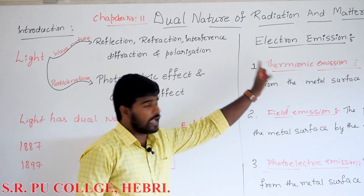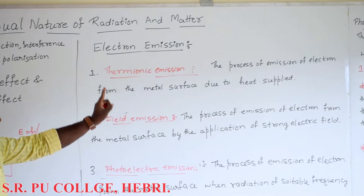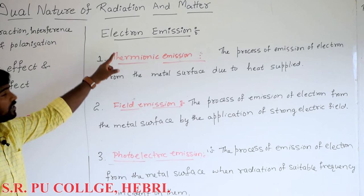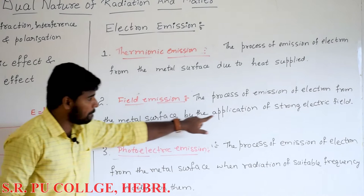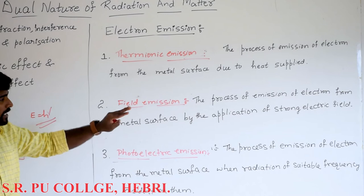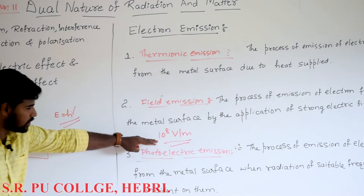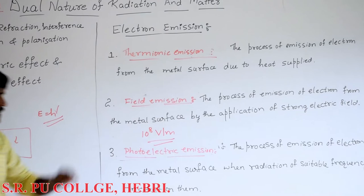The emission of electron from the metal is called electron emission. The first type: thermionic emission — the process of emission of electron from the metal surface due to heat supplied is called thermionic emission. The second type: field emission — the process of emission of electron from the metal surface by the application of a strong electric field, of the order of 10 to the power 8 volt per meter, is called field emission.